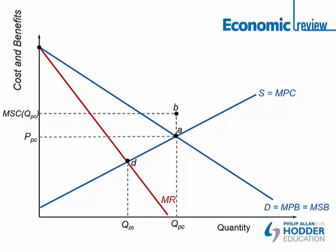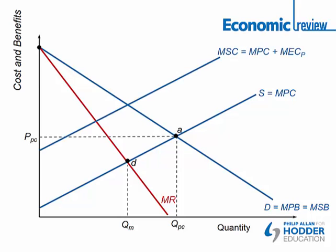We've still got a monopoly producing at point D. Now, let's assume that the external costs are actually bigger, the externalities are bigger. I've sort of fiddled this diagram slightly. Let's imagine that now the gap between the marginal social cost and the marginal private cost is bigger because the externalities are bigger.